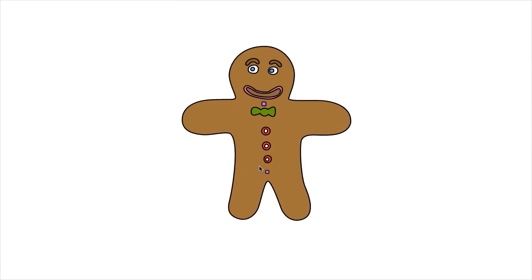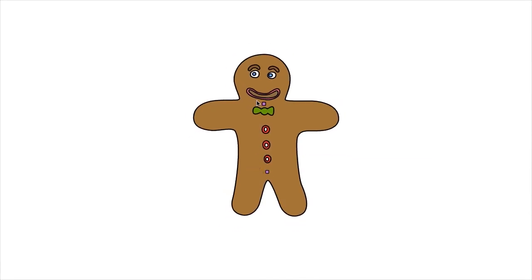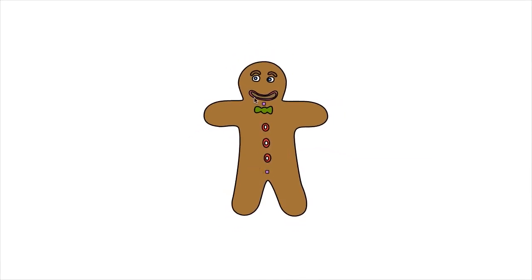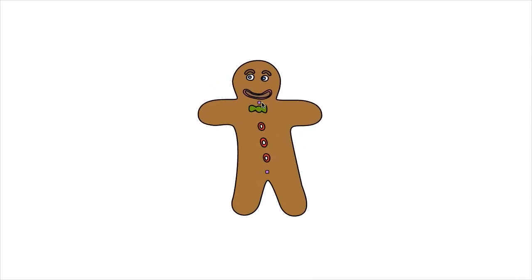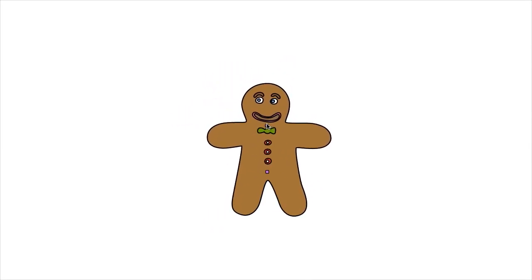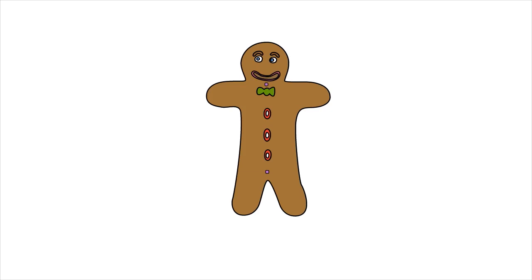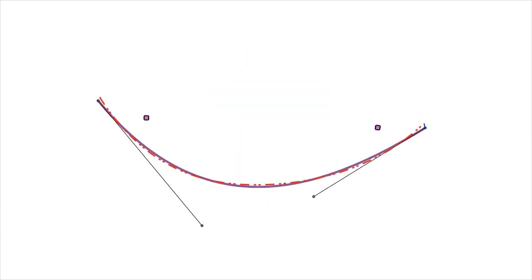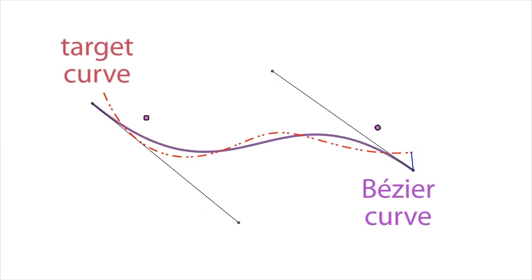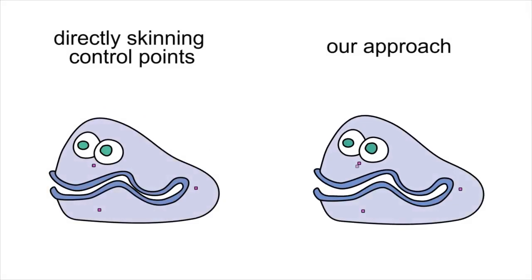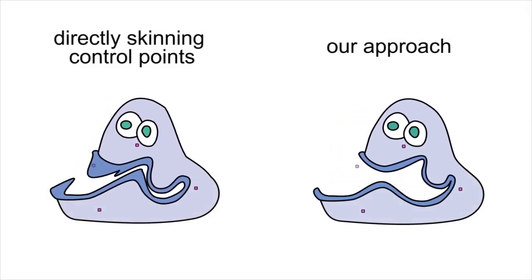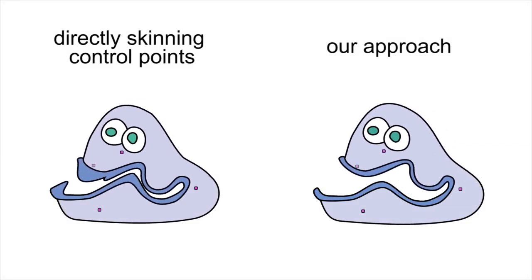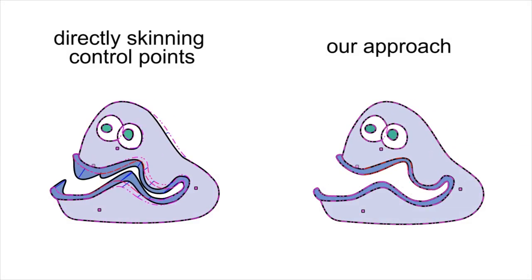Real-time space deformations, under the umbrella term of linear blend skinning, define the deformation of a point on the shape as a weighted combination of transformations provided at a sparse set of handles. Skinning vector graphics requires care because a deformed Bézier curve is, in general, no longer representable by a Bézier curve. Naively skinning the input spline control points as regular points in space will not produce the same deformation as deforming the curve point-wise.